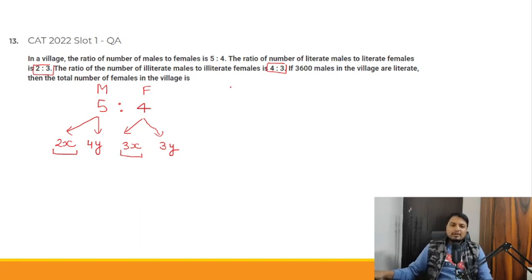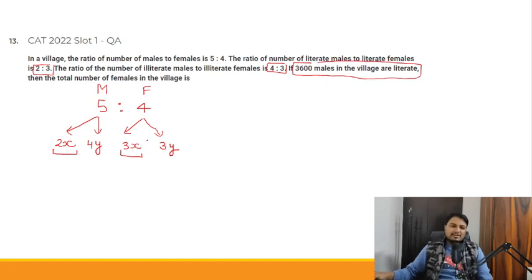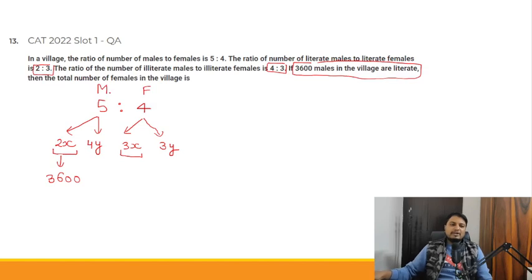It is given that 3600 males in the village are literate, meaning 2x = 3600. We need to find the total number of females in the village.